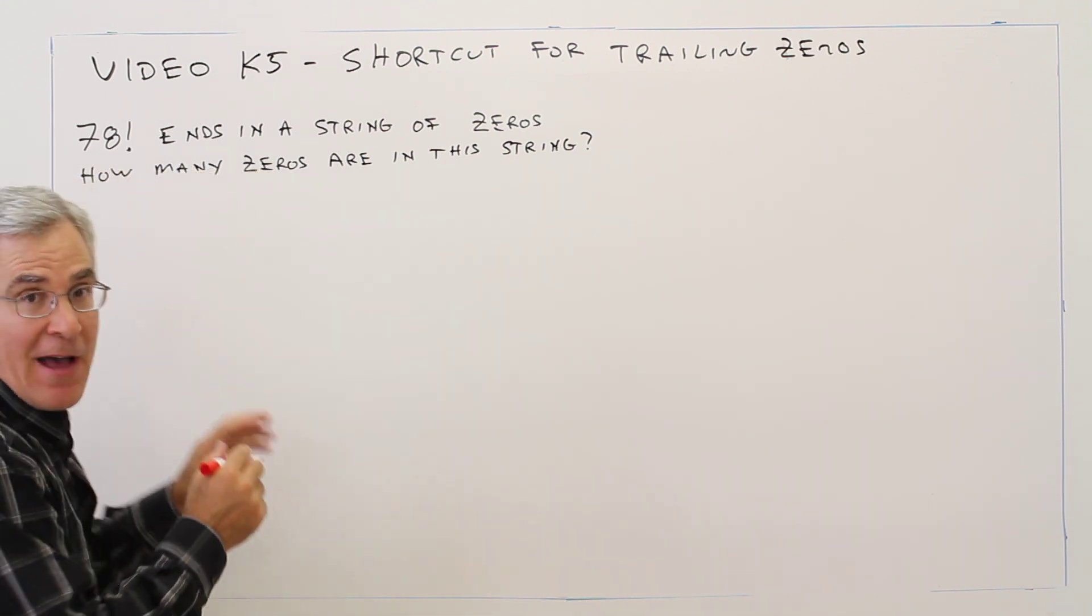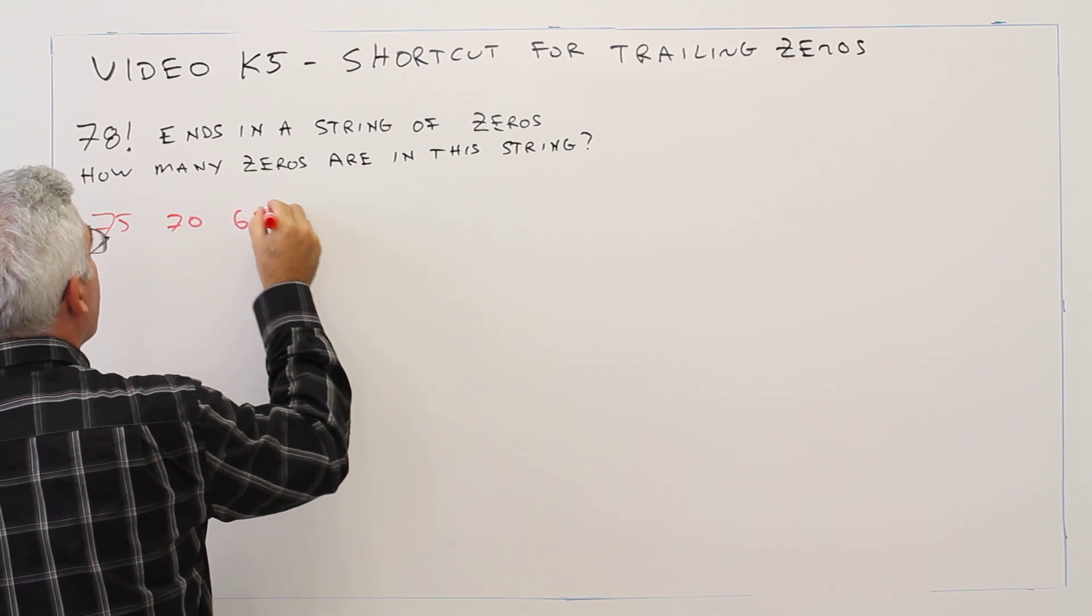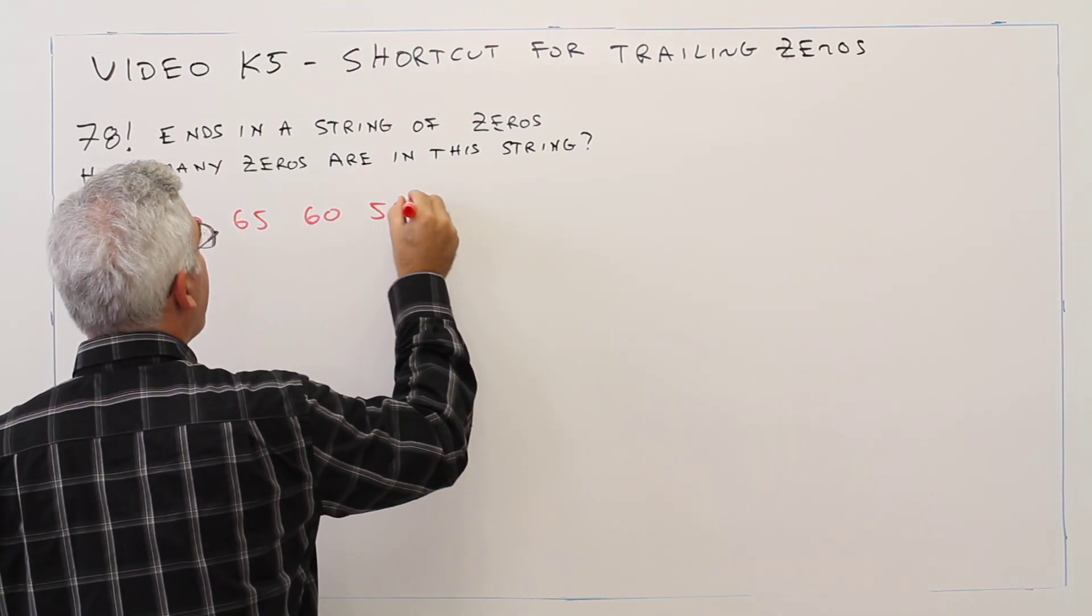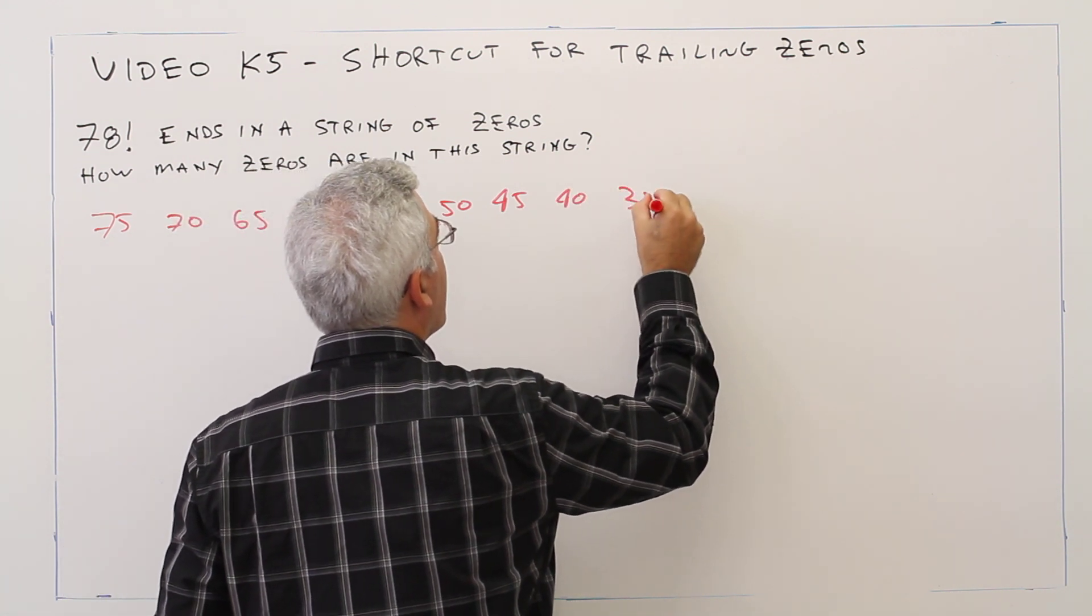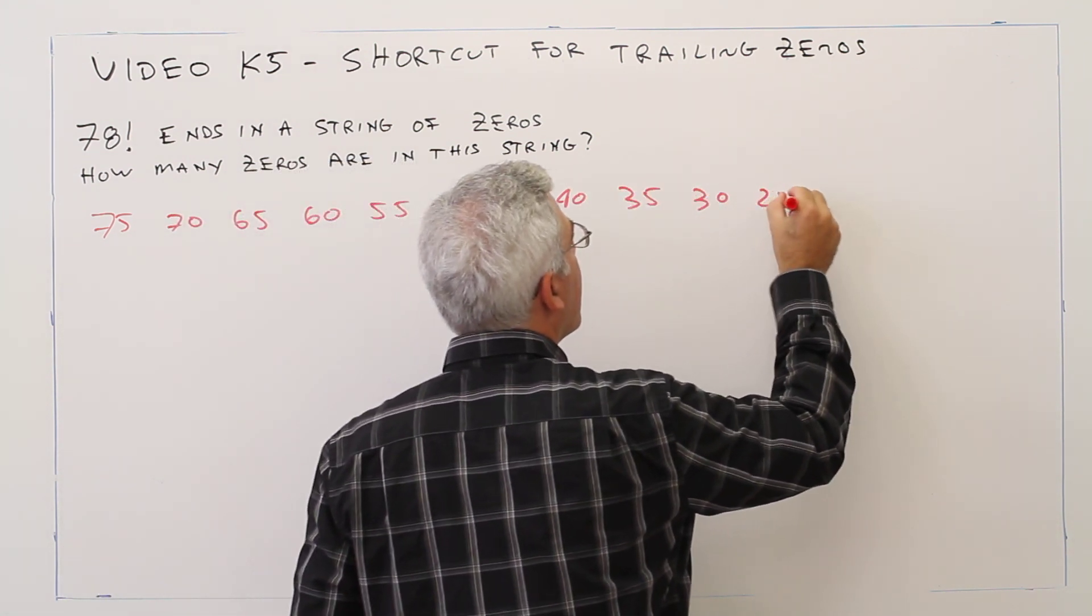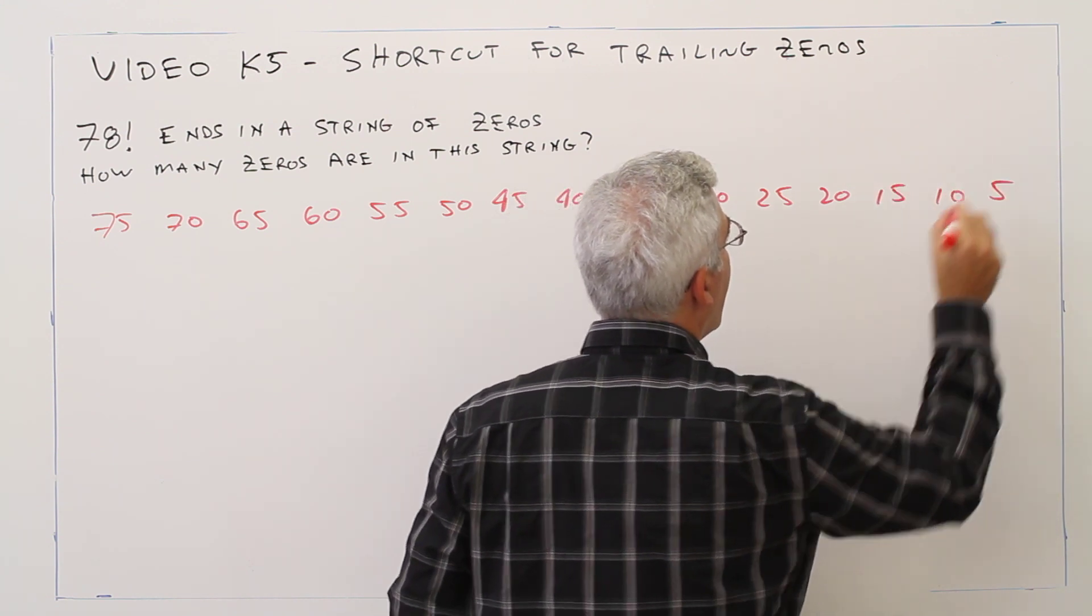So 75 would be the first one. So 75, 70, 65, 60, 55, 50, 45, 40, 35, 30, 25, 20, 15, 10, and 5.